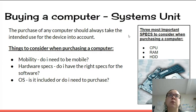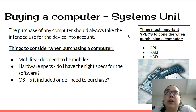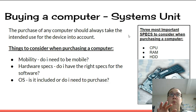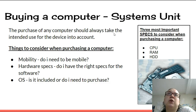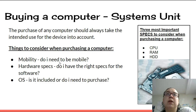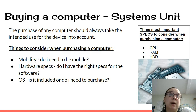We looked at when you're buying a new computer, particularly looking at your systems unit. If you think of a desktop PC, it's the actual box. The purchase of any computer should always take the intended use of the device into account. Do I need to be mobile? If you needed to be mobile, you probably would have purchased a laptop or a tablet.